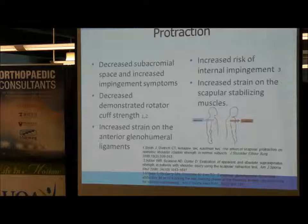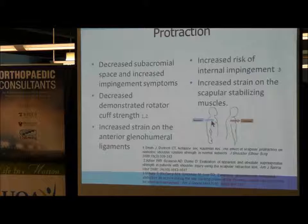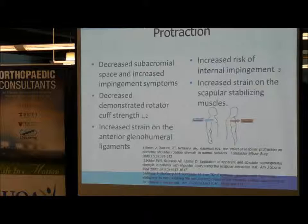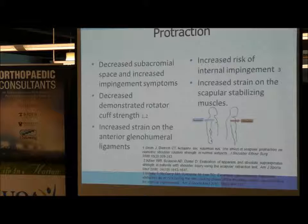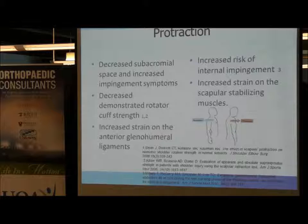Most problems arise with protraction. Retraction is bringing the shoulders back, while protraction is hunching the shoulders forward, and protraction is more often the cause of problems. It decreases the subacromial space leading to impingement, decreases rotator cuff strength, increases strain on the anterior glenohumeral ligaments, increases the risk of internal impingement, and increases strain on the scapular stabilizing muscles. Working with these patients, you really want them to focus on strengthening the muscles that retract the shoulders.